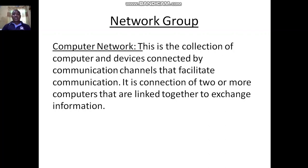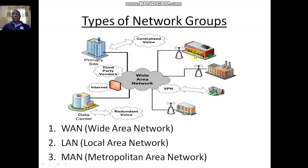For network group, we said it is the collection of computers and devices that are connected together. The second thing we are looking at is the types of network group, and we have three types: the first one is WAN, which is Wide Area Network; followed by LAN, which is Local Area Network; and the last one is MAN, which is Metropolitan Area Network.